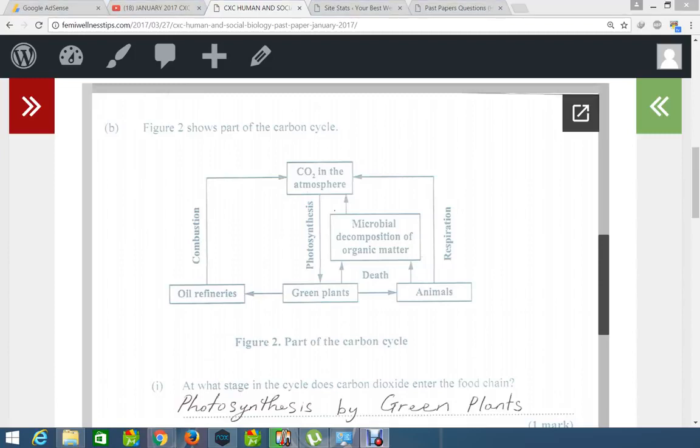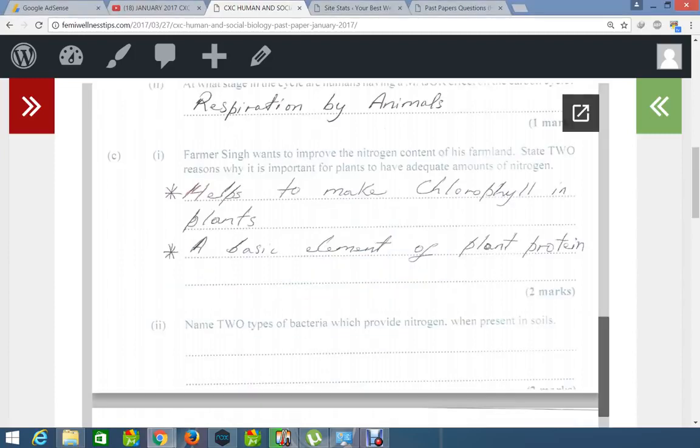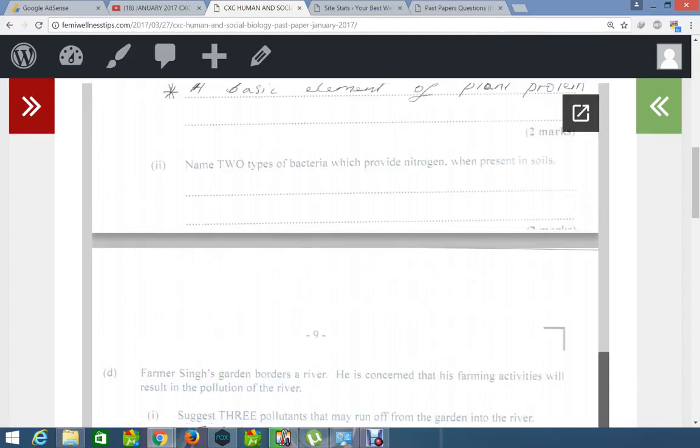Let's move on to the next question. Now, this farmer wants to improve the nitrogen content of his farmland. State two reasons why it is important for plants to have adequate amounts of nitrogen. My possible answers: helps to make chlorophyll in plants, so that's one function of the nitrogen. Next function: a basic element of plant protein. So those are the two possible answers there.